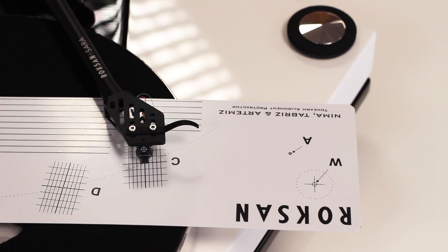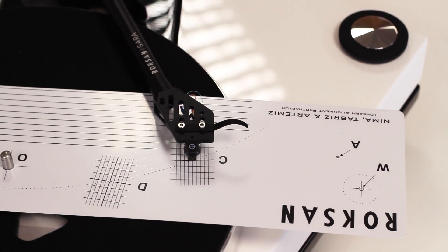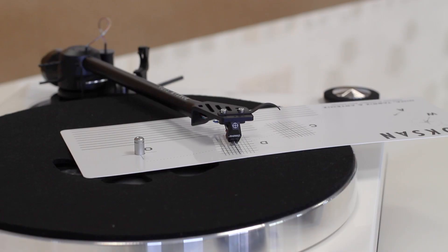Place the alignment protractor flat on the turntable with the spindle through the hole. Bring the arm across the protractor to points C and D. The stylus tip should be within the small circle.